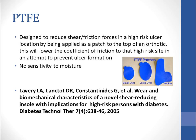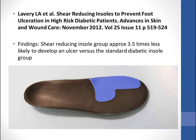This 2005 paper, 'Wear and Biomechanical Characteristics of a Novel Shear-Reducing Insole with Implications for High-Risk Persons with Diabetes,' looked at a similar material called GlideSoft and found 57% less peak shear force when compared to a standard insole, which could perhaps reduce skin breakdown, blistering, and ulceration. And this 2012 article, 'Shear-Reducing Insoles to Prevent Foot Ulceration in High-Risk Diabetic Patients,' found that two thin nonstick sheets placed between layers of EVA and foam diabetic inserts reduced shear stress, and the shear-reducing insole group was 3.5 times less likely to develop an ulcer compared to a standard diabetic insole — a tremendous reduction.